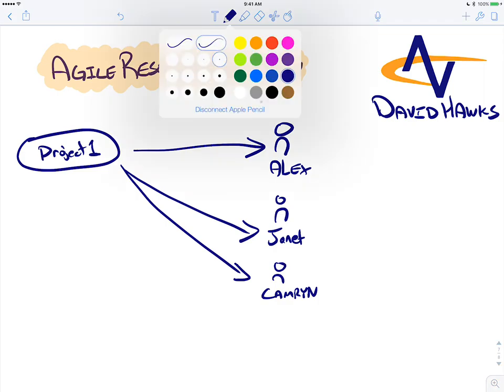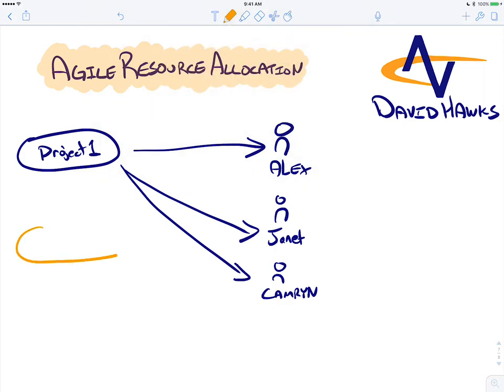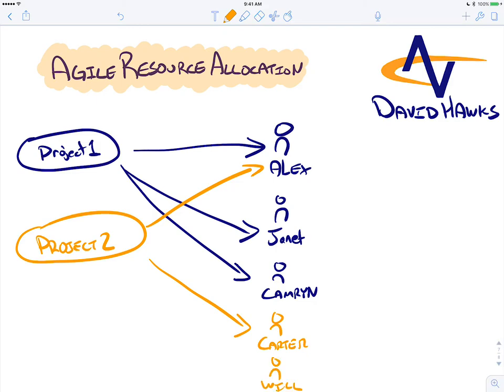Then all of a sudden comes Project 2. So we say, Project 2, who do we need for Project 2? Well, we need Alex, and we're also going to need Carter for this. So we assign some work to Carter, and we need Will involved in this. So we assign some work to Will.